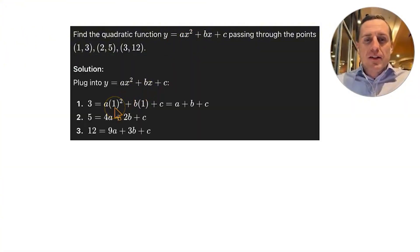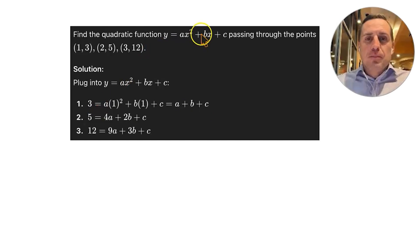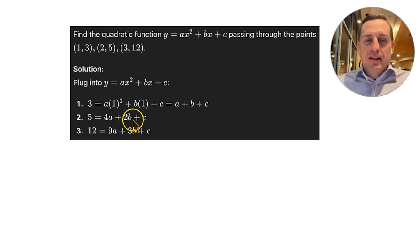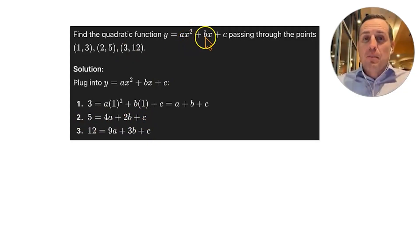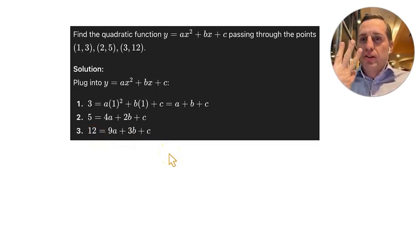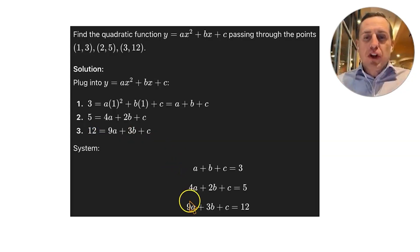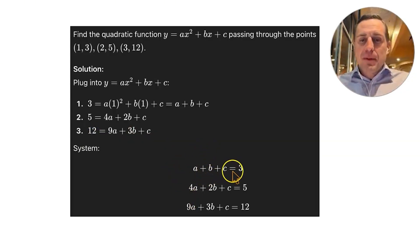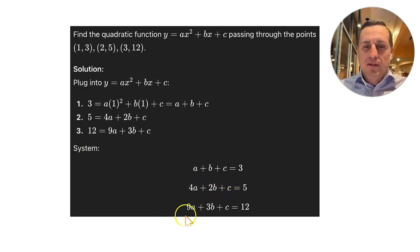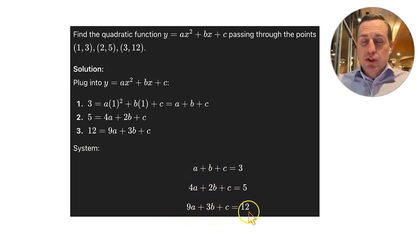Plugging in X equals 1: A plus B plus C equals 3. Plugging in X equals 2: 4A plus 2B plus C equals 5. Plugging in X equals 3: 9A plus 3B plus C equals 12. We now have a 3×3 linear system to solve.